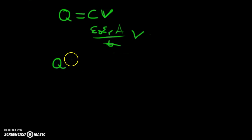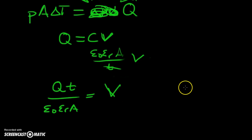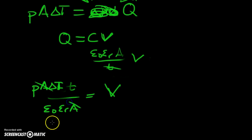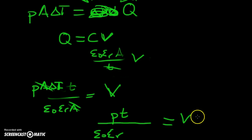Substituting Q equals p times A times delta T, the areas cancel out, and we end up with: voltage equals p times the thickness divided by the permittivity, times delta T. So the voltage does not depend on the area but does depend on the thickness. For a larger voltage, use greater thickness, lower permittivity, and a higher pyroelectric coefficient.